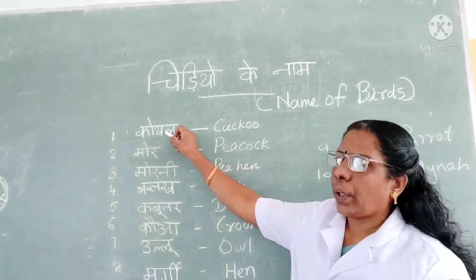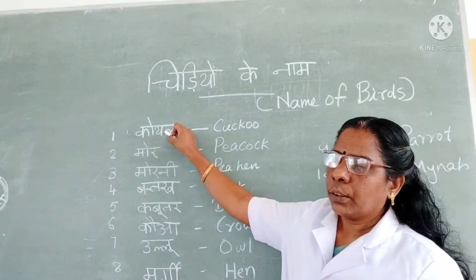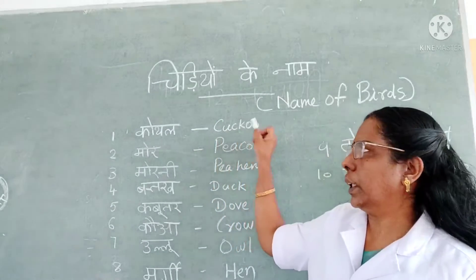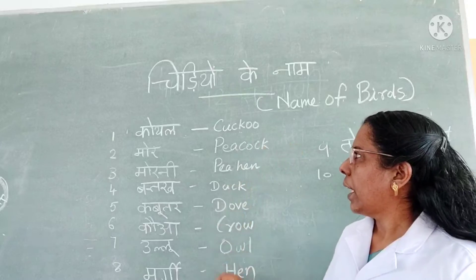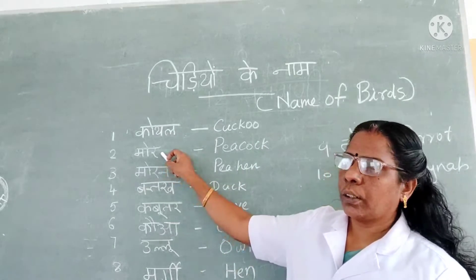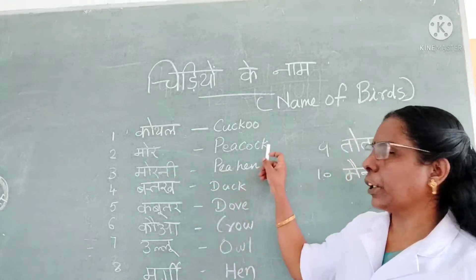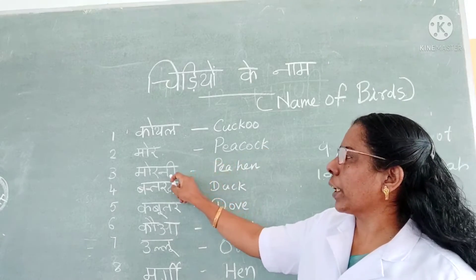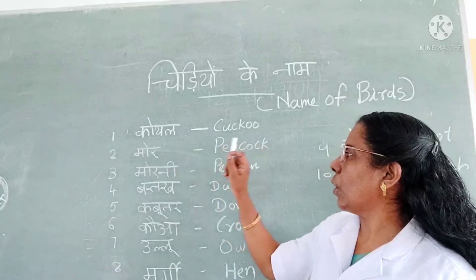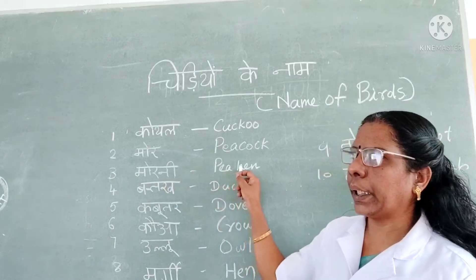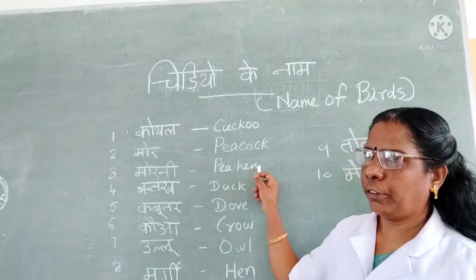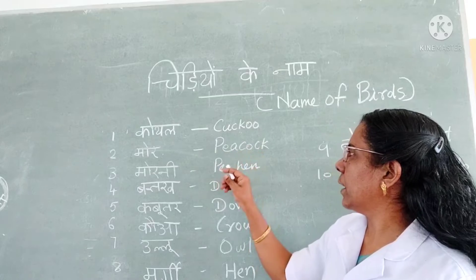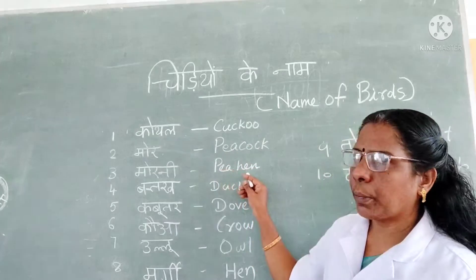First one: koyal. You know — kukku. Koyal ke arth kya hai? Kukku — cuckoo bird. And mor. Mor kya hai? Peacock. And moorni — peahen. Feminine gender. So this one is masculine gender and this one is feminine gender.